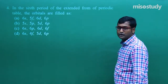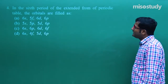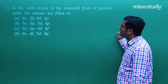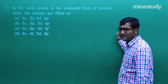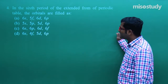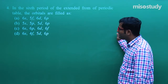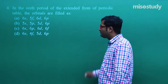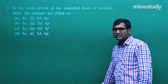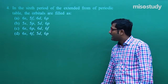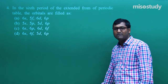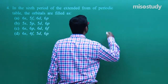Question number four: in the sixth period of the extended form of the periodic table, in what order are the orbitals filled? The options given involve sequences like 6s, 4f, 5d, 6p and others.